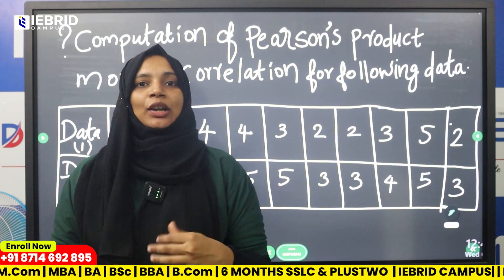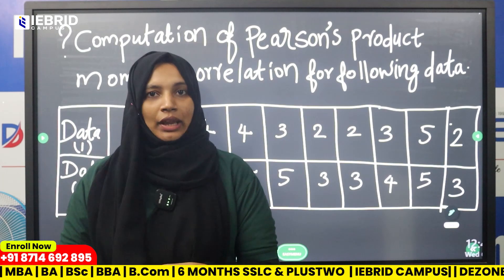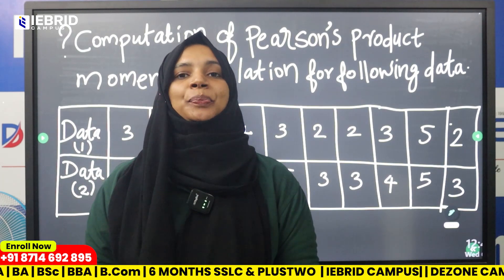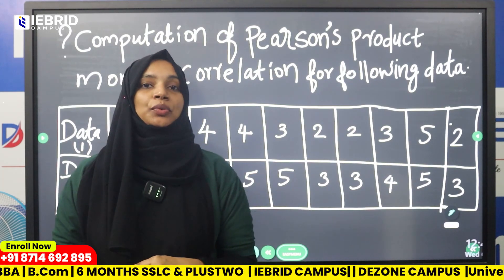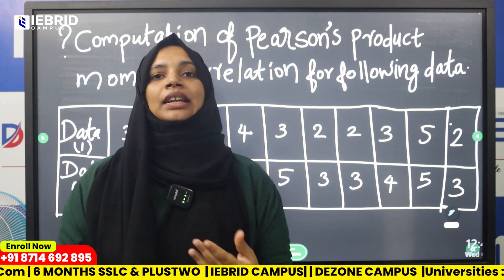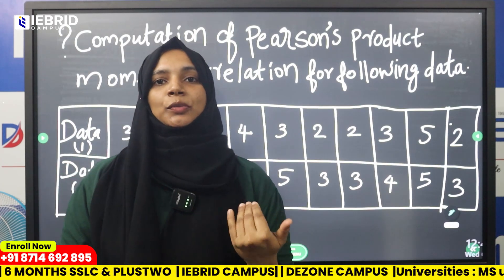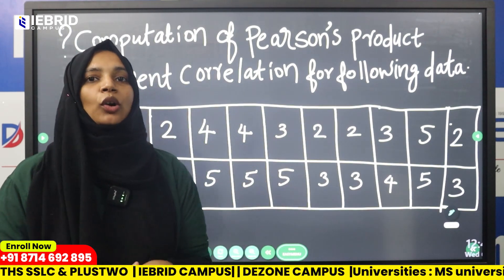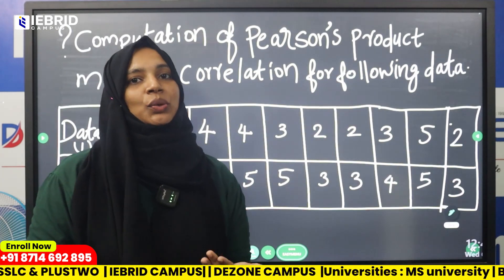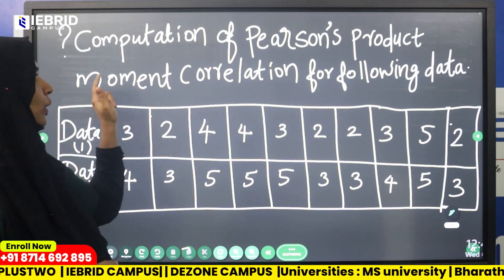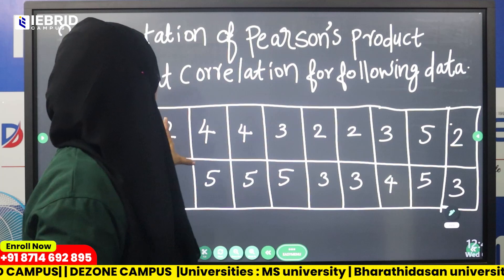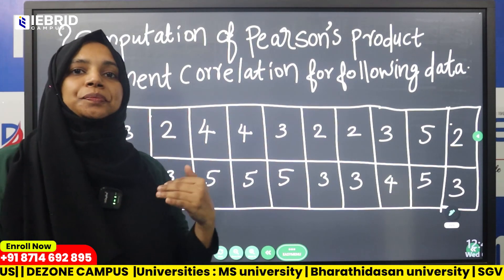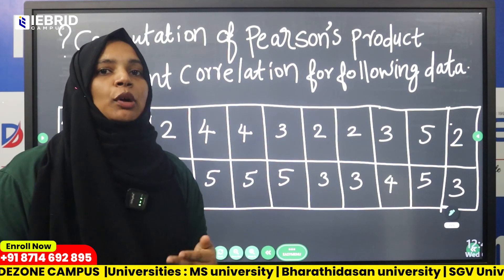In psychology, it is called MPC-06 and BPC-104. Today we will discuss common questions from both. This topic is Pearson's Product Moment Correlation. We have two datasets — Data 1 and Data 2 — and that is why we use Pearson's Product Moment Correlation.